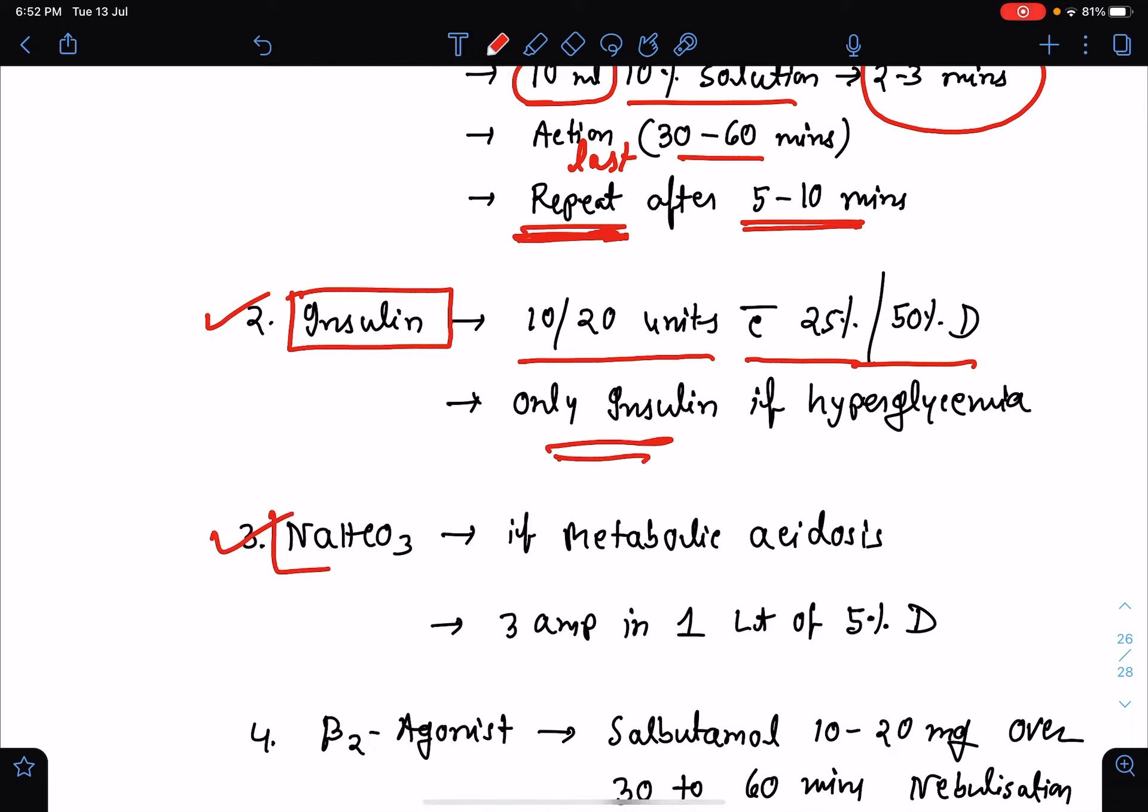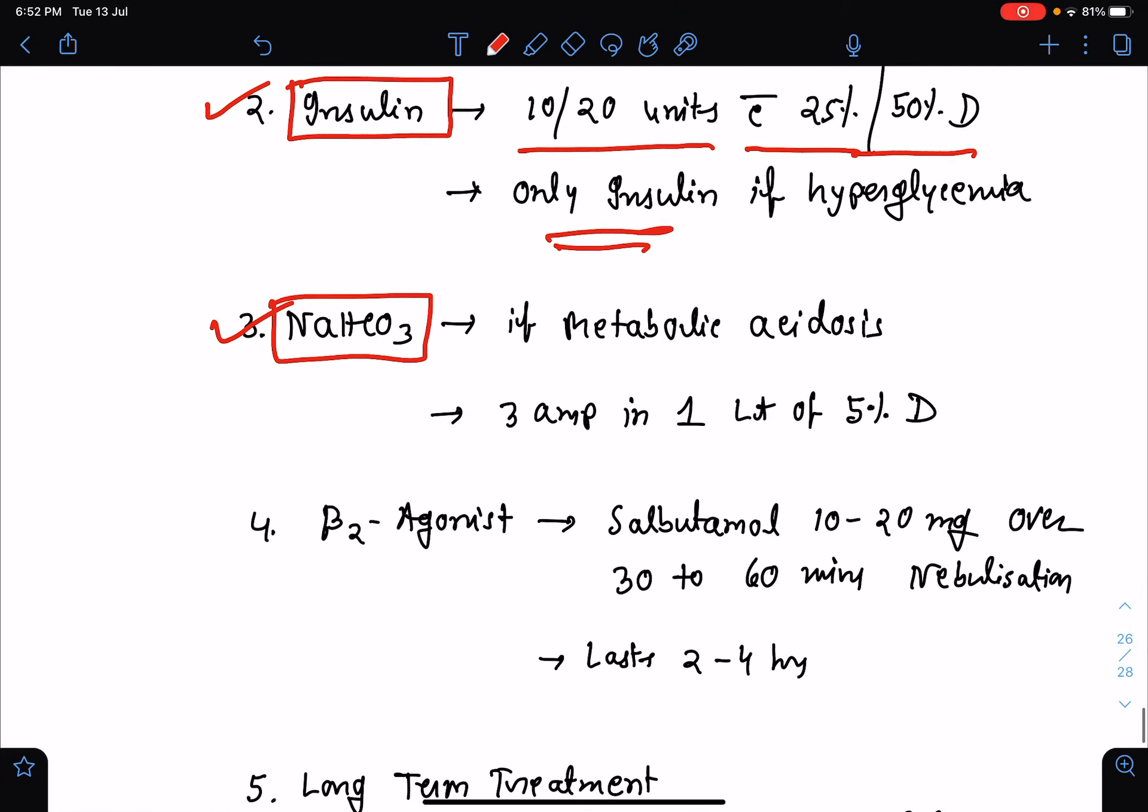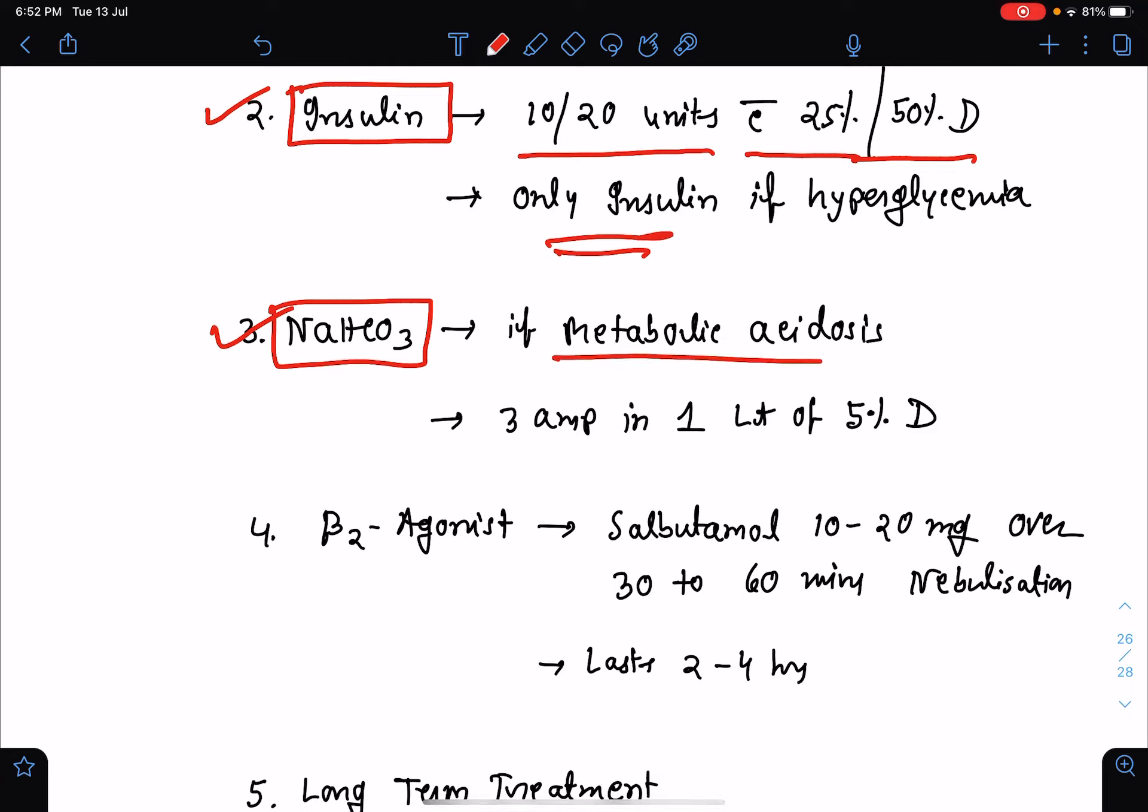Third option is sodium bicarbonate. But sodium bicarbonate, we should be giving only if there is hyperkalemia associated with metabolic acidosis. We need to administer around 3 ampoules of soda bicarb in 1 liter of 5% dextrose.